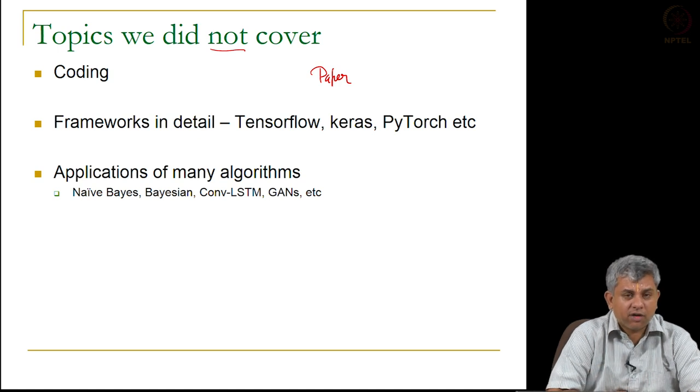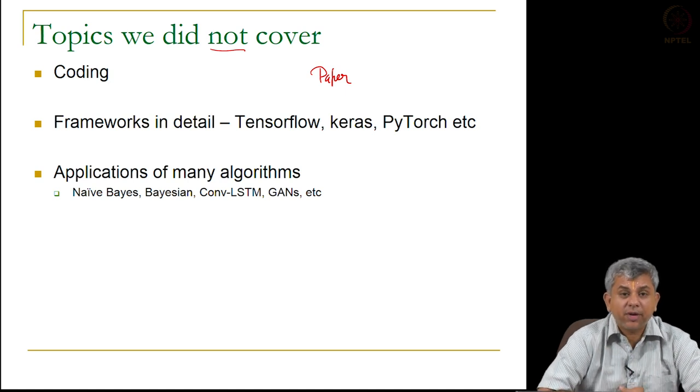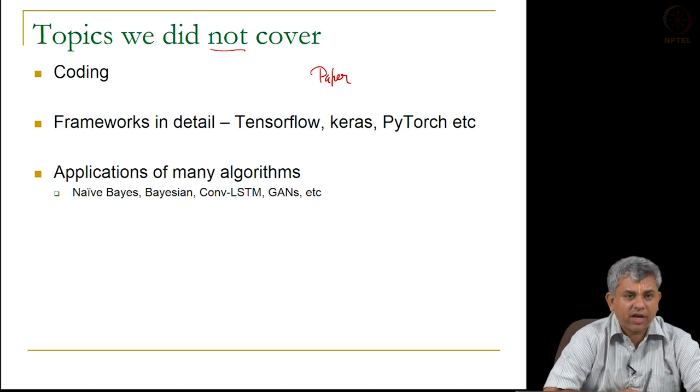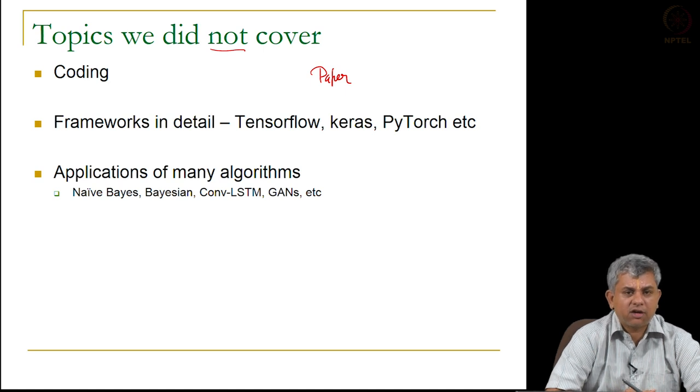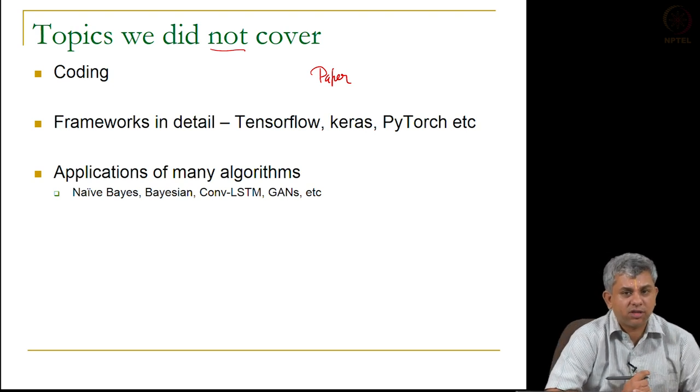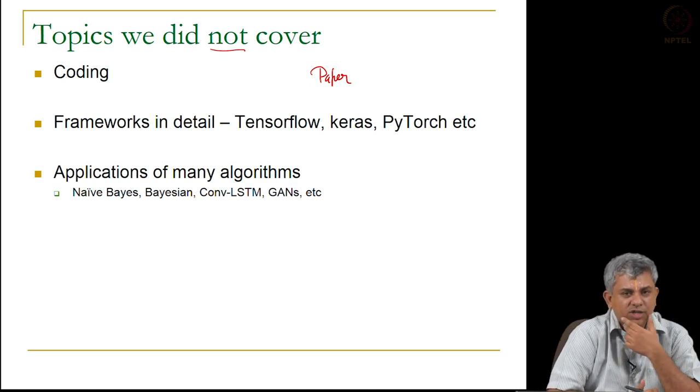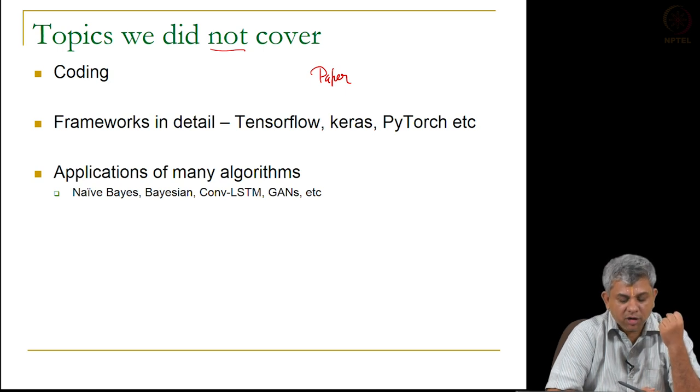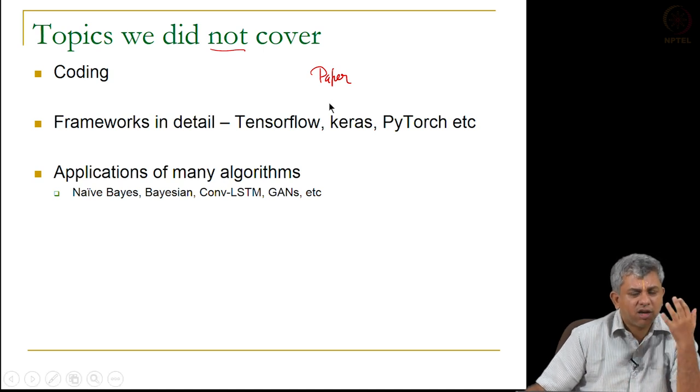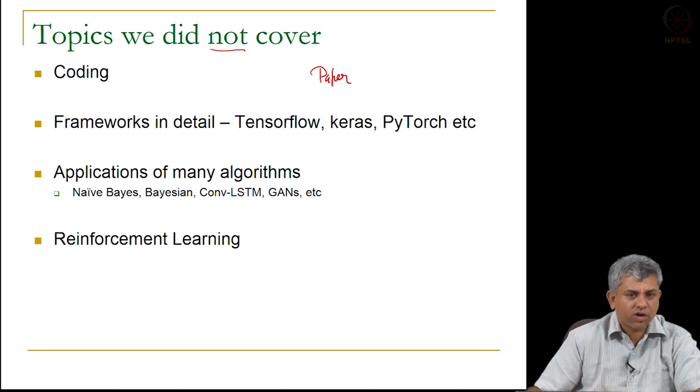We did not cover applications of many of the algorithms that we talked about. We went through them really rapidly, for example convolutional LSTM, GANs, MLE, MAP, Bayesian. How do you actually apply them? You have just seen them in theory. They have beautiful applications within inverse problems. I was planning on showing one such application, but unfortunately time was too short and it would have become too complex. Naive Bayes, binary trees, random forest, SVM, etc. have very nice applications in engineering and science, but this course was too short for us to cover that.